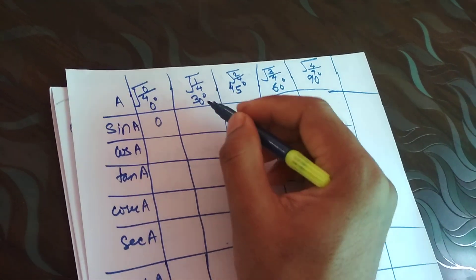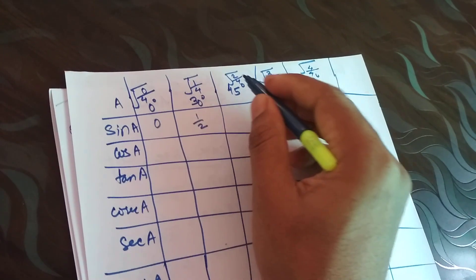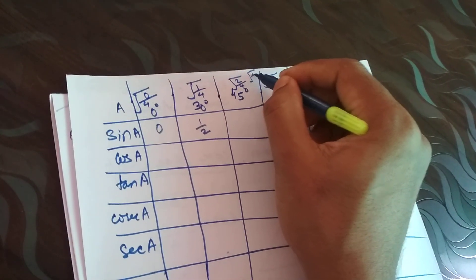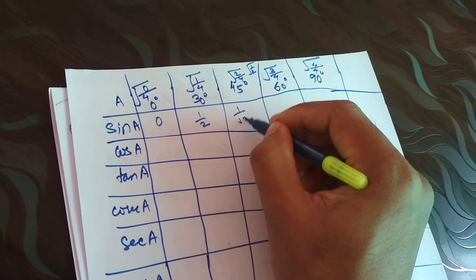Root of 1 by 4, this is 1 by 2. 2 by 4, I can cancel it. It will look like 1 by root 2.